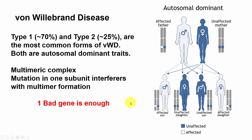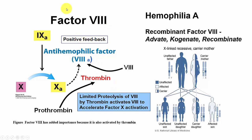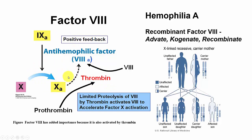Factor 8 is the hemophilic factor, and its deficiency is responsible for Hemophilia A, affecting about 1 in 5,000 males. Normally, prothrombin is activated by Factor 10a to form thrombin; once thrombin is formed, it converts Factor 8 into activated Factor 8, which speeds up the clotting process — a positive feedback acceleration at the site of clot formation.